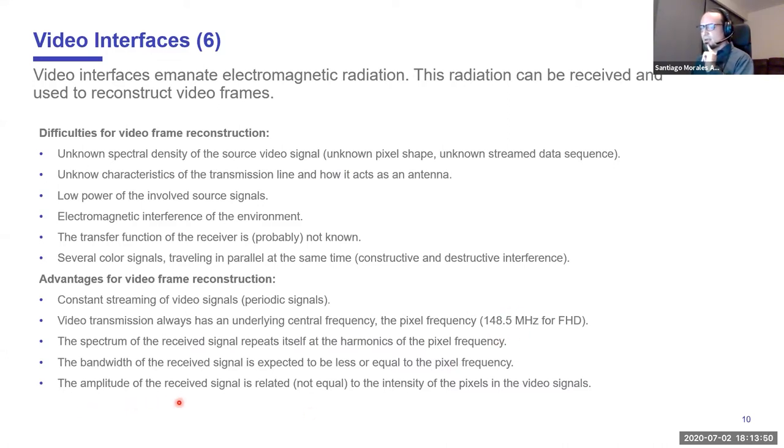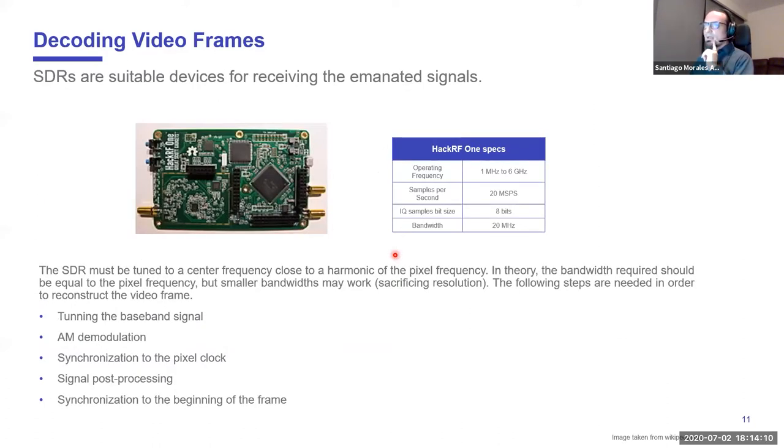We also know that the spectrum of the baseband signal is going to repeat itself at the harmonics of this pixel frequency. And we know that the bandwidth of the received signal is expected to be less than or equal to this frequency. Finally, we also know that there is a relationship between the amplitude of the signal and the intensity of the pixels in the transmitted data. This relationship means we can reconstruct video frames. So what tool are we using? Normally we can use an SDR. The main reasons are because they are cheap, but also because they can be tuned in a wide range of frequencies from one megahertz to six gigahertz.